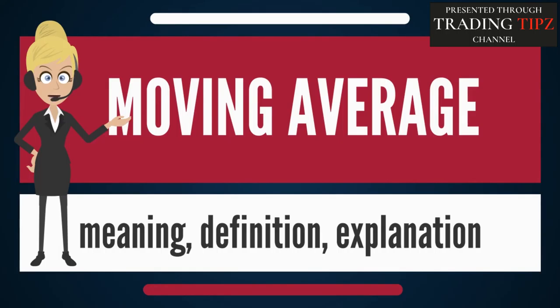The threshold between short-term and long-term depends on the application, and the parameters of the moving average will be set accordingly. For example, it is often used in technical analysis of financial data like stock prices, returns, or trading volumes.